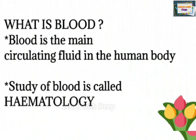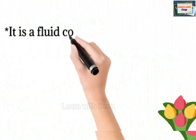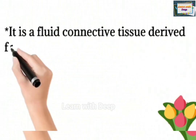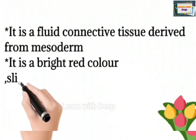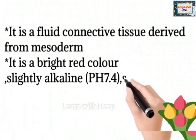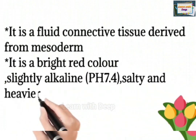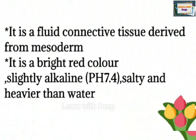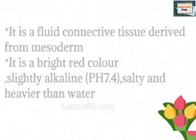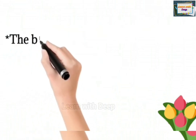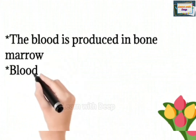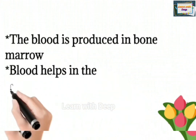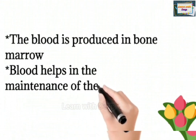Blood acts as protection against disease. It is a fluid connective tissue derived from mesoderm. It is bright red in color, slightly alkaline with a pH of 7.40, and slightly heavier than water. Blood is produced in bone marrow and helps in the maintenance of body temperature.